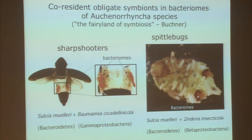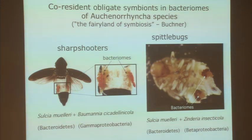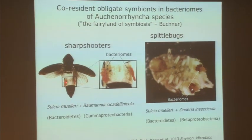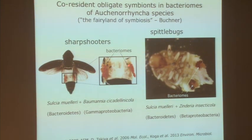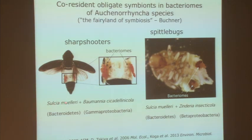About 10 years ago I started work on symbionts in the Auchenorrhyncha, another group of sap-feeding insects. Paul Buchner referred to it as the 'Eldorado' or 'fairyland' of symbiosis, because of the complex symbioses with several symbionts in the same host. He tried to work out an evolutionary scheme for how the symbionts were acquired. The initial system we looked at was sharpshooters, and later we looked at spittlebugs and others.